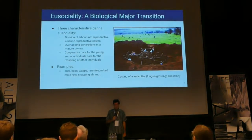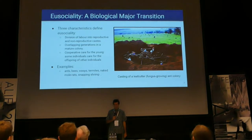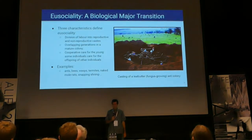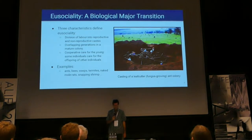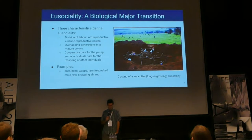Eusocial animals are characterized by division of labor, overlapping generations in the colony, and cooperative care for the young. Examples of eusocial animals are ants, bees, wasps, termites, naked mole rats, and snapping shrimp.